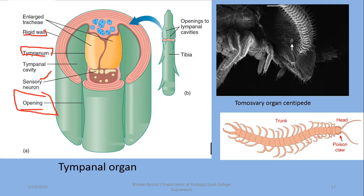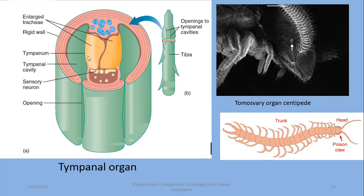When vibrations are produced in the surrounding environment, the tympanum vibrates and this information passes to the sensory neuron. The sensory neuron ultimately passes the signal to the central nervous system, where it is processed with the help of interneurons, and the processed signal is then passed to the effector organ. This is how detection of sound with the help of tympanal organs operates.